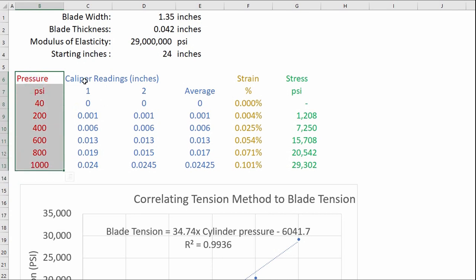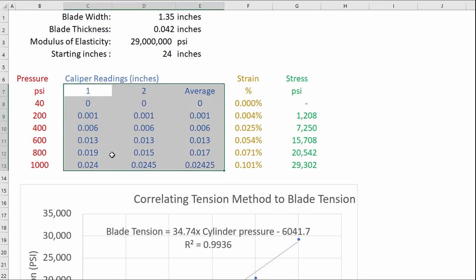And then we have our caliper readings. Now I just did this twice and I've done this some other a few other times as well but for this exercise I just did it twice and then I took an average and so I averaged those readings.